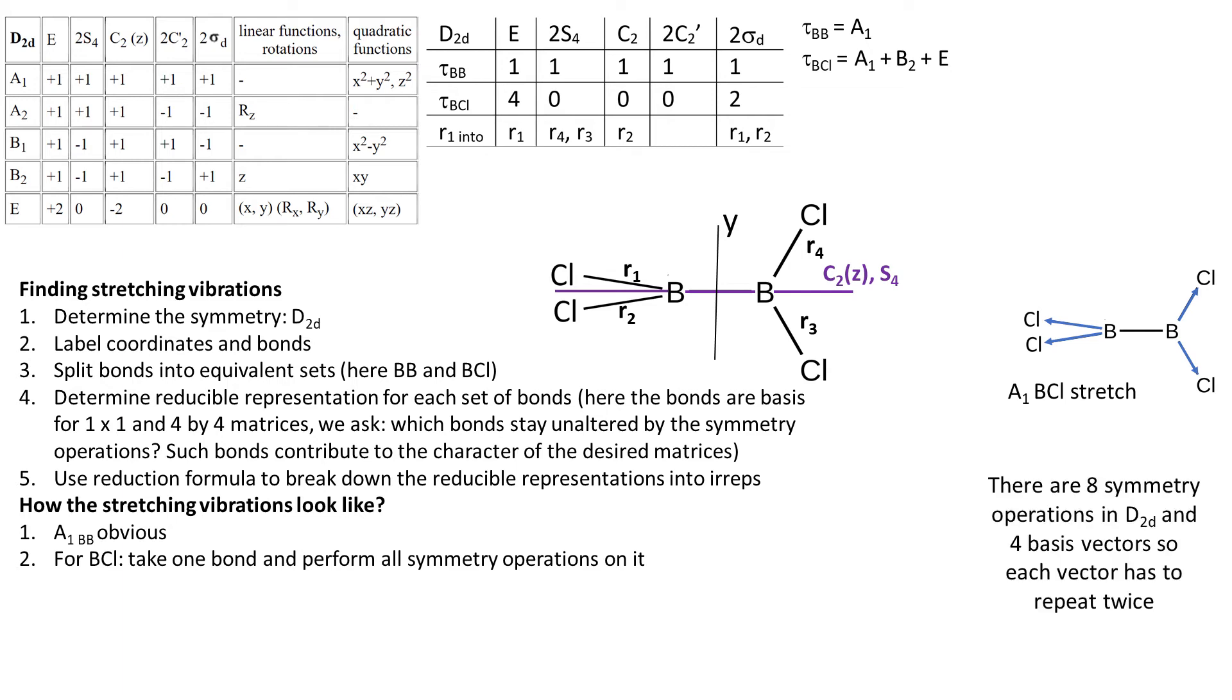We have eight symmetry operations in D2D. That means the unnormalized symmetry adapted linear combinations for A1 will be equal to this. Knowing that, what do we need under C2 prime?